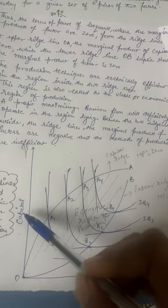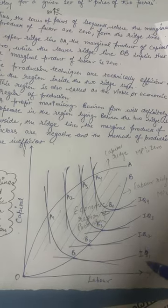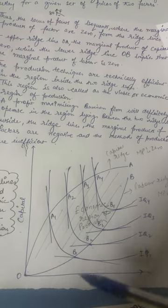Isoquants combine two factors of production and show the level of output that can be produced with the help of these two factors of production.